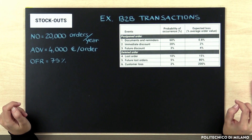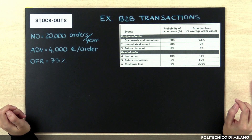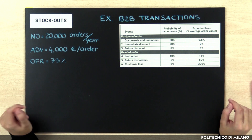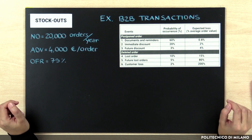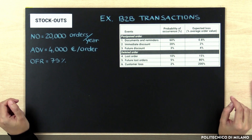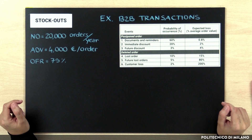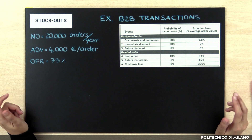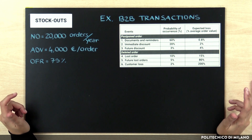Let's see a numerical example referred to B2B transactions. We consider a company that on average receives 20,000 orders per year and the average value of an order is equal to 4,000 euros. The order fill rate is equal to 75%. The possible events following a stock-out, with the relative probability and the corresponding expected loss expressed as a percentage of the average order value, are reported in the table. For example, the probability that the customer asks for an immediate discount is equal to 20% and the expected loss is equal to 2% of the value of the order.